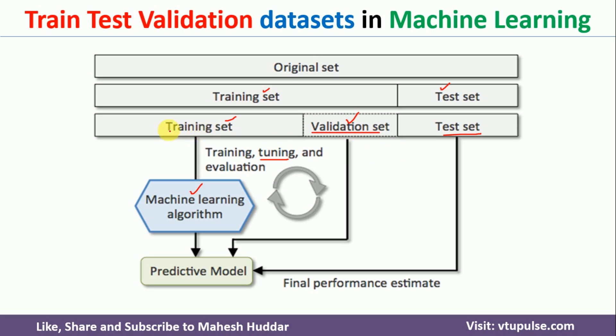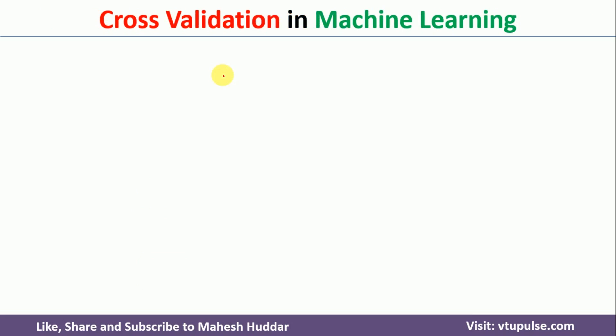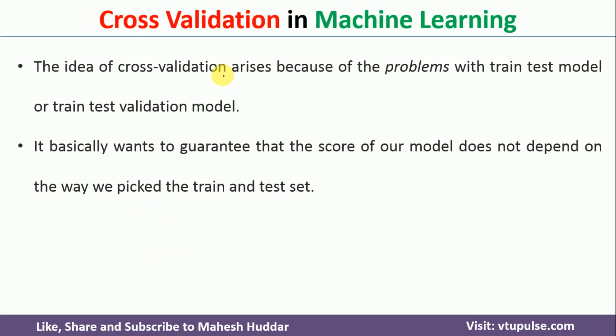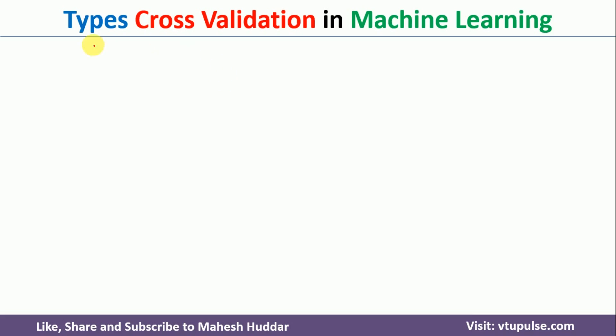That is, the model will work perfectly on the training data, but it will not work on testing or may not work as expected in the real world. To avoid these difficulties, we come across something called cross-validation. In cross-validation, we will train the model with the entire dataset as well as test it with the help of the entire dataset. Before we understand cross-validation, we will look at the different types of cross-validation we have.